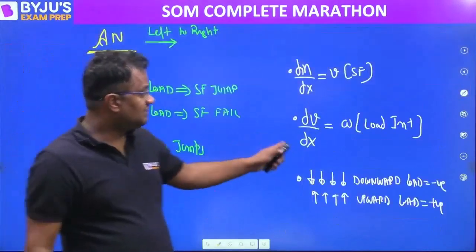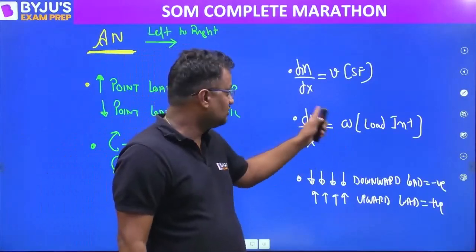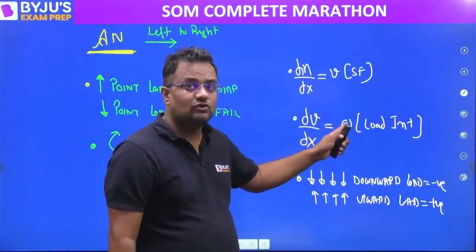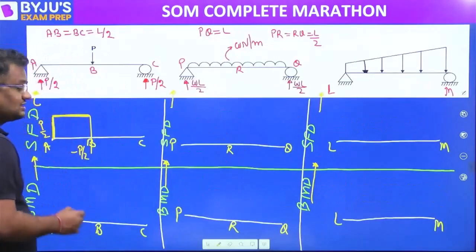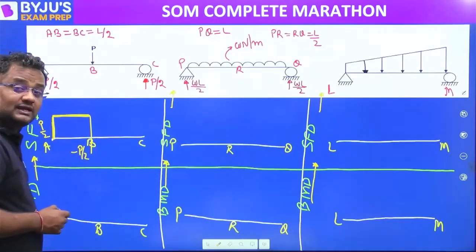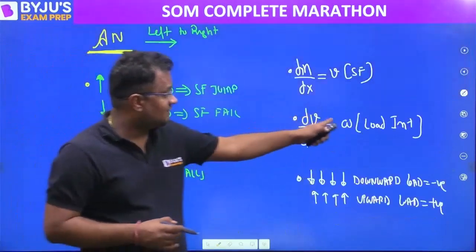No load from B to C means dV/dx equals w, and w equals zero, so V is constant.